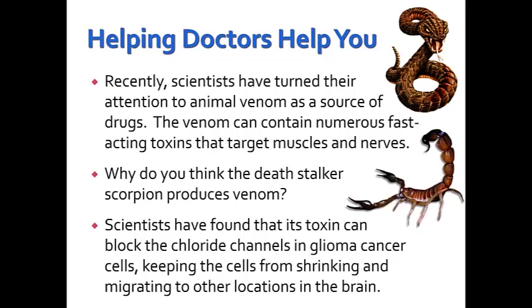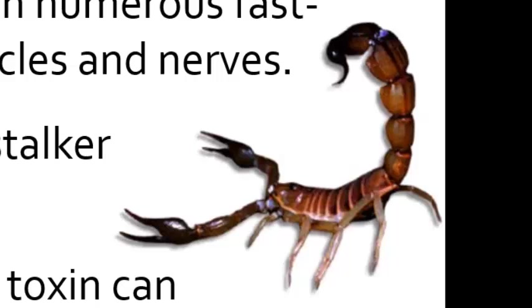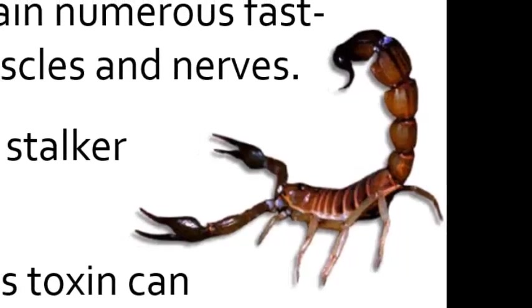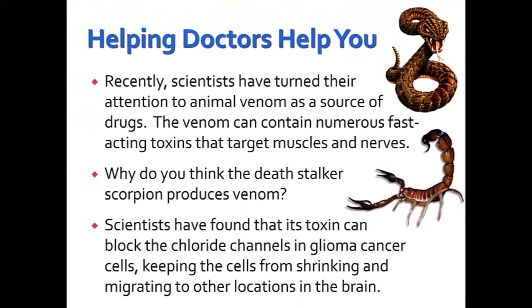Recently, scientists have turned their attention to animal venom as a source of drugs. The venom can contain numerous fast-acting toxins that target muscles and nerves. The death stalker scorpion produces venom to paralyze its prey. Scientists have found that its toxin can block the chloride channels in glioma cancer cells, keeping the cells from shrinking and migrating to other locations in the brain — so that's an application chemists have developed from this venom.